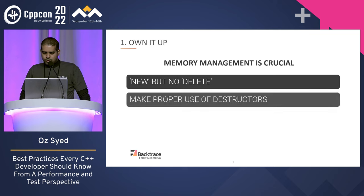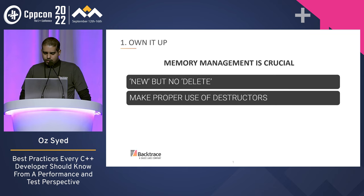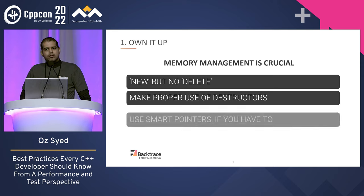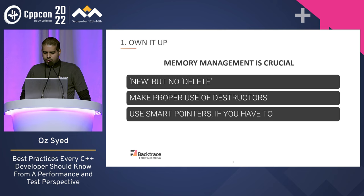Make sure your destructors actually perform the work they're supposed to do — do not leave them unimplemented. If you allocated memory in a constructor or elsewhere in the class, make sure you deallocate it. If you initialize the system from an external library, for instance, shut it down in the destructor. In short, take extra care when you own the memory. If memory management is an issue, you can also consider, where needed, smart pointers.